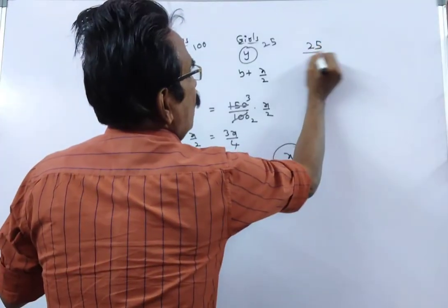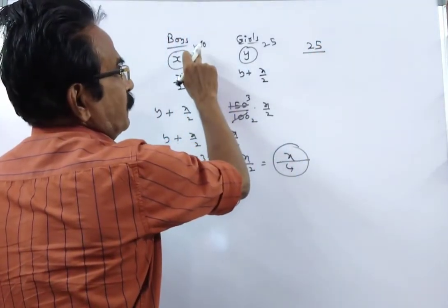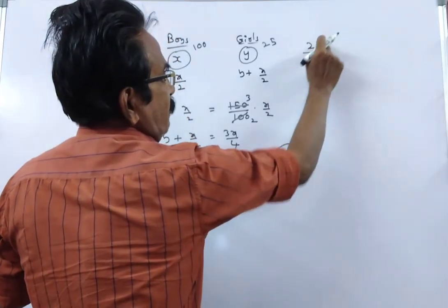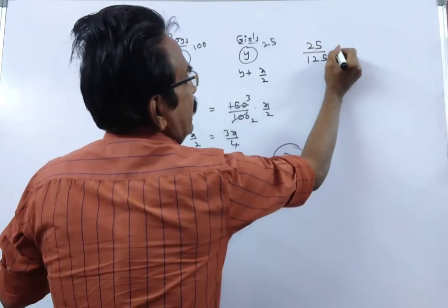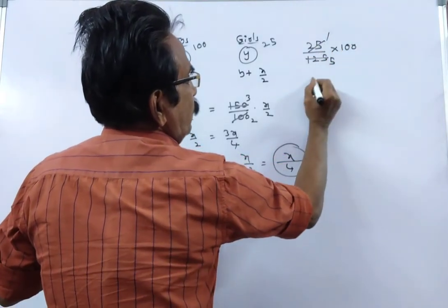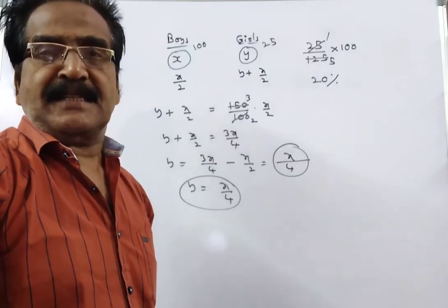So, girls, overall class total number is 100 plus 25, 125. Girls is what percent of overall class? Into 100: 25, 5, 5, 20. 20% is your answer, friends.